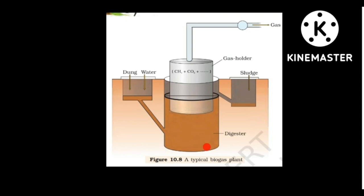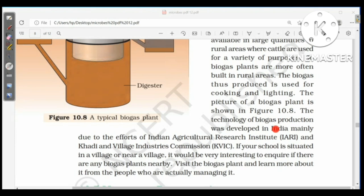In a typical biogas plant, dung mixed with water (a slurry) is fed through a tube to the digester. A gas holder rises as biogas — comprising methane, carbon dioxide, and hydrogen sulfide — is produced, and the gas is supplied to houses through another tube. The spent sludge is collected through another outlet and used as fertilizer. The technology of biogas production was developed in India mainly due to the efforts of IARI (Indian Agricultural Research Institute) and KVIC (Khadi and Village Industries Commission).